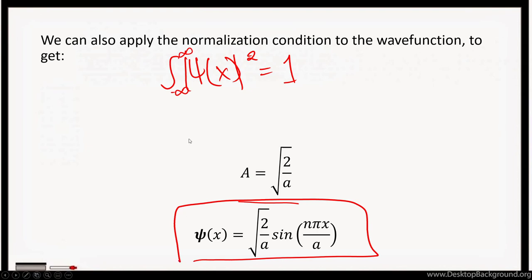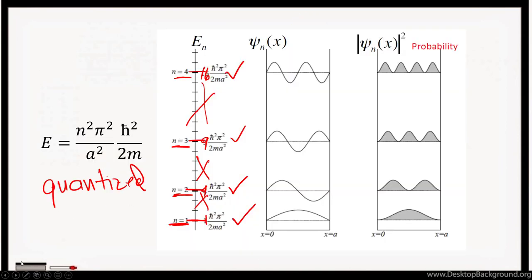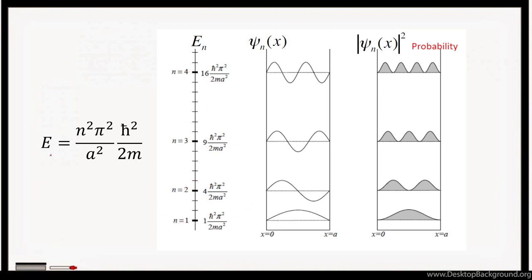So that's the infinite potential well case for a 1D particle. It's important to know here that your energy would now be quantized. It's no longer continuous such as in a free particle.